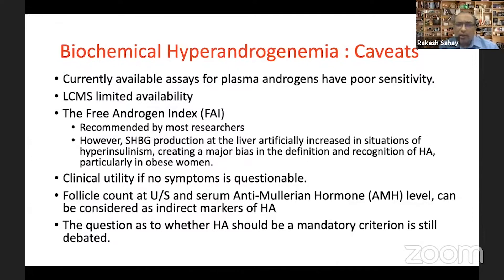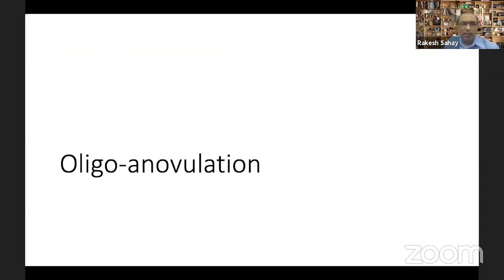The follicle count on ultrasound and serum AMH levels can sometimes be used as indirect markers of hyperandrogenism. The question of whether hyperandrogenemia should be a mandatory diagnostic category is still debated, and there is a category of women who may not have hyperandrogenemia but still qualify for the definition of PCOS.